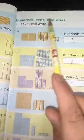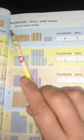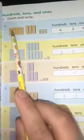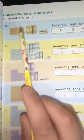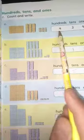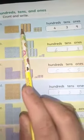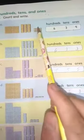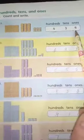Hundreds, tens and ones. Question number 2, count and write. Sabse pahle hundred ko count karenge. 1, 2, 3, 4. Four hundreds. And tens? 1, 2, 3. Three tens. And ones? 1, 2, 3, 4, 5, 6, 7, 8, 9. Nine ones. The answer is 439.